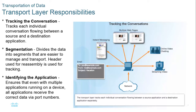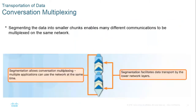When the transport layer accepts a long stream of data from the application layer, it segments it and assigns sequence and acknowledgement numbers so the data can be put back together in the right order. If anything is missing, only the missing segment needs to be resent — not the whole stream. Multiplexing allows multiple conversations — two web browsers, a printer, an email program — to share the same network wire on a single PC.